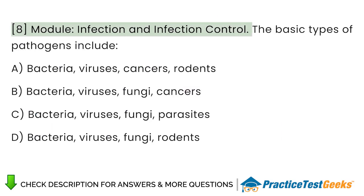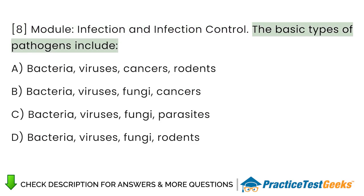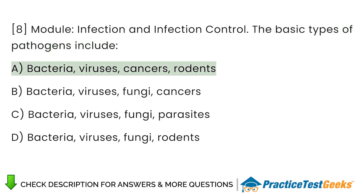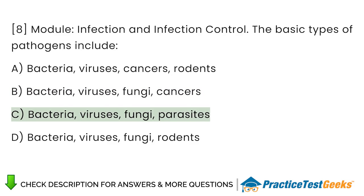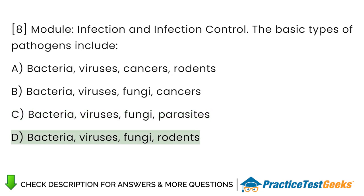Module: Infection and Infection Control. The basic types of pathogens include: A. Bacteria, viruses, cancers, rodents. B. Bacteria, viruses, fungi, cancers. C. Bacteria, viruses, fungi, parasites. D. Bacteria, viruses, fungi, rodents.